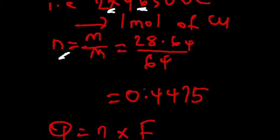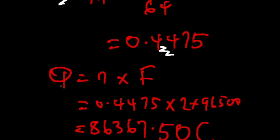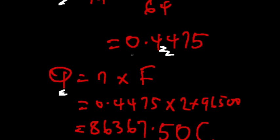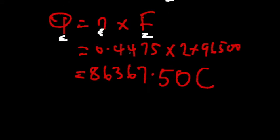That will give us 0.4475 moles of copper. So the quantity of electricity that is required to give us 28.64 grams copper will simply be the number of moles multiplied by the faraday value. That will give us 0.4475 multiplied by 2 multiplied by 96500, which will give us a total of 86367.50 coulombs.